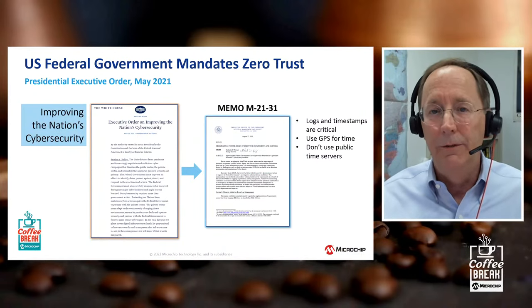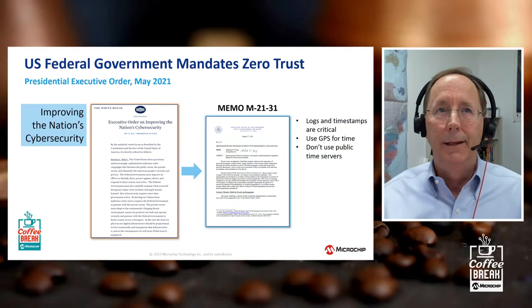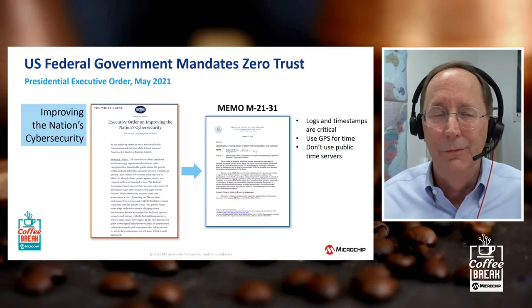Accurate time for log files is really important for network forensics. If you're an IT professional and something goes wrong, you're going to rely on network management reports, and those reports are built from log file aggregation from servers, workstations, routers, and so forth. One of the things in those memorandums is: don't use public time servers. If you're going to use a public time server it's on the internet — all you really know is an IP address, and you are granting implicit trust to that IP address to provide accurate, reliable, secure time. That fundamentally violates the zero trust paradigm.